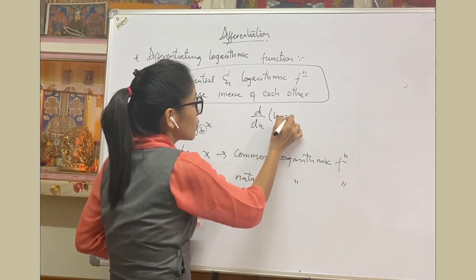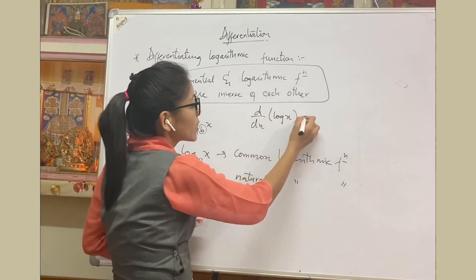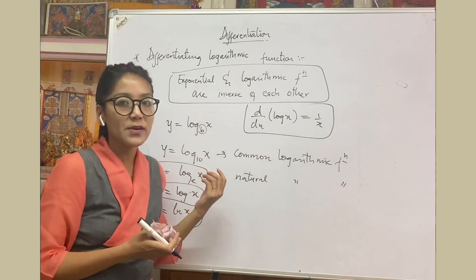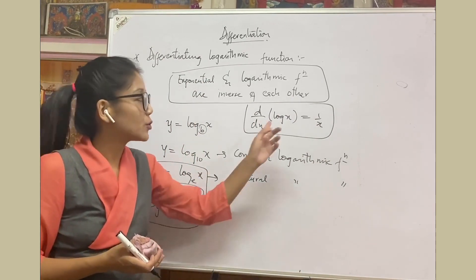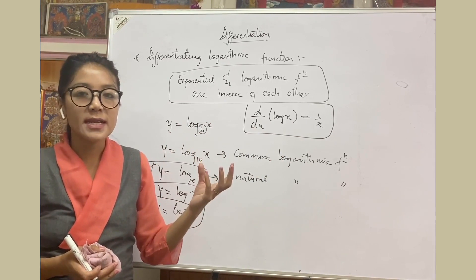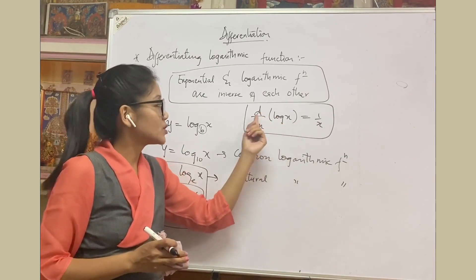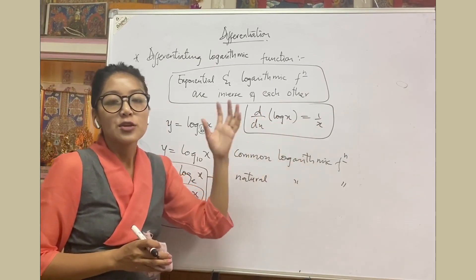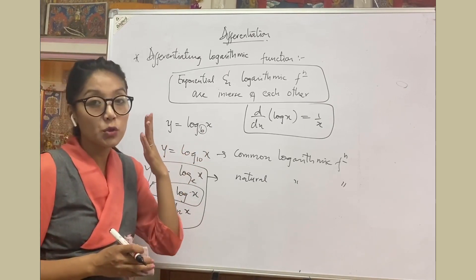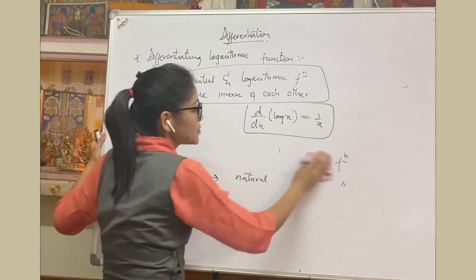The derivative formula: derivative of log x (base e understood) is 1/x. The proof can be obtained using the first principle method, similar to how we derived derivatives of sin x and cos x. You just need to know this formula: d/dx(log x) = 1/x.